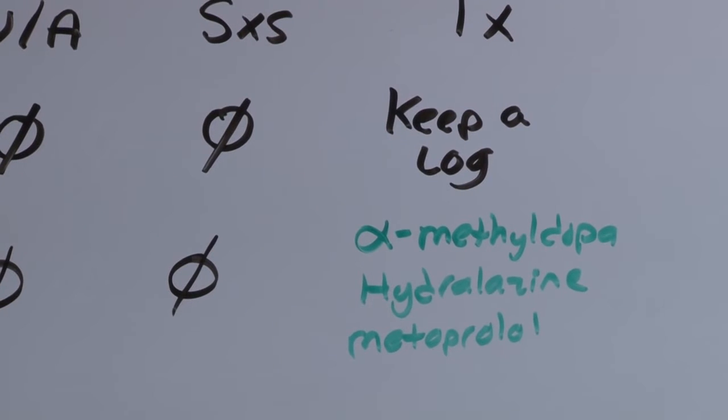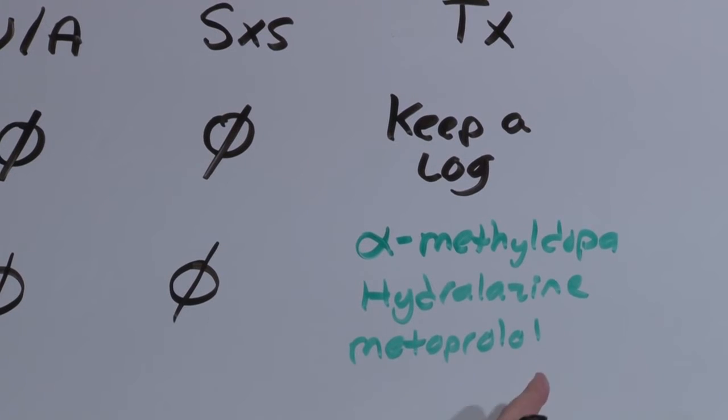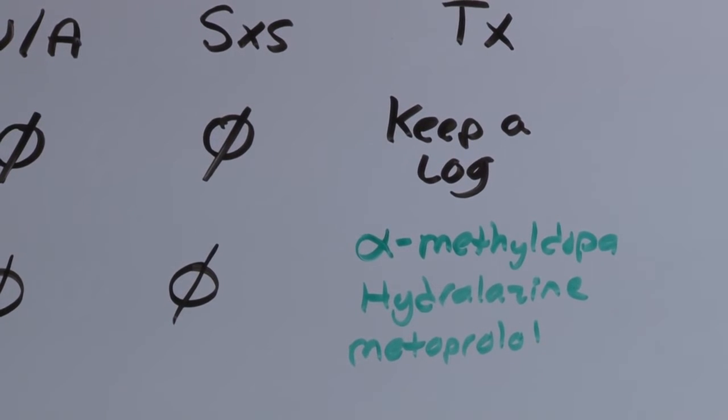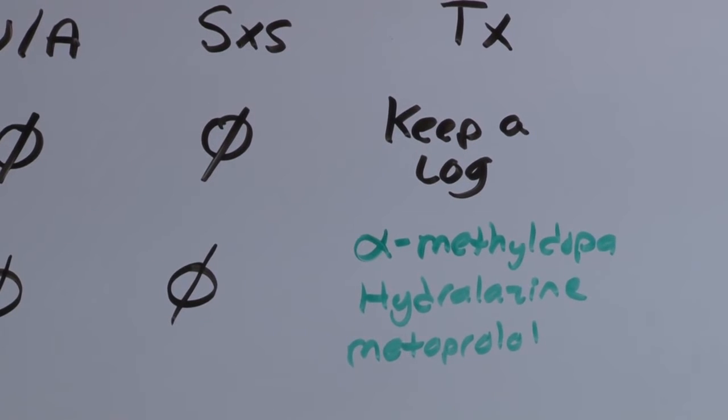This is very important because if she has chronic hypertension and begins to develop preeclampsia, if she's not well controlled under medications, you won't know if the elevation in blood pressure is preeclampsia or just worsening of her hypertension disease.